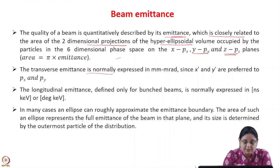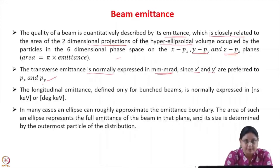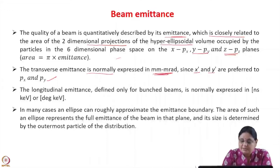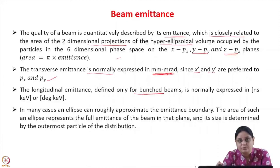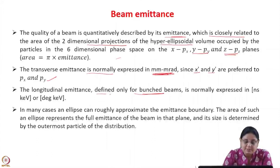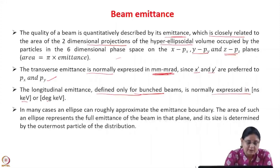The transverse emittance is normally expressed in millimeter-millirad, since x' and y' are preferred over p_x and p_y; the emittance is taken in the trace space x-x'. The longitudinal emittance is defined only for bunched beams — for a DC beam the beam is continuous in z and the emittance is not defined in that direction. The longitudinal emittance is normally expressed in nanosecond-keV or degree-keV.